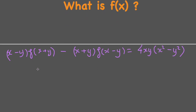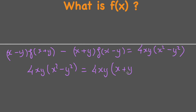We can notice that on the right-hand side of the equation we have 4xy multiplied by (x squared minus y squared), which equals 4xy multiplied by (x plus y)(x minus y). So we can see there's something similar on the left side and the right side — that's the (x plus y) and (x minus y) terms.